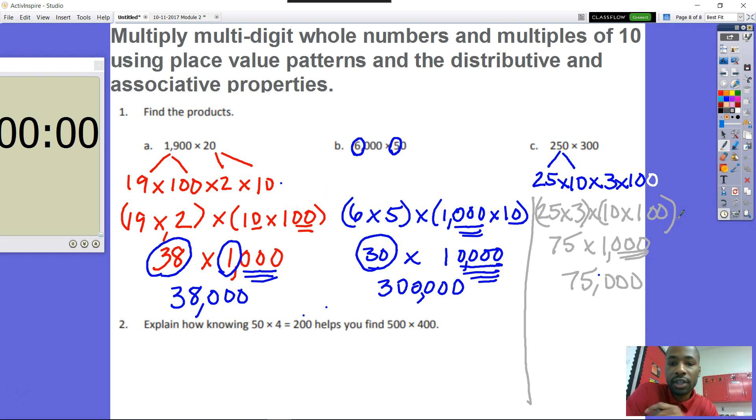All right, so now it says explain how knowing 50 times 4 is equal to 200 helps you find 500 times 400. All right, so it didn't ask you to solve. It asked you to explain how this problem here, this equation, can help you with this expression. So, like I said in class, what I would do is I would talk about how both numbers have 5 and a 4. 5 and a 4. And if you know that 5 times 4 is 20, you can solve either one of these problems. We know that this 5 was 5 times 4, and then it also had a 10 in it because it was 5 tens. You just factored out that 50.